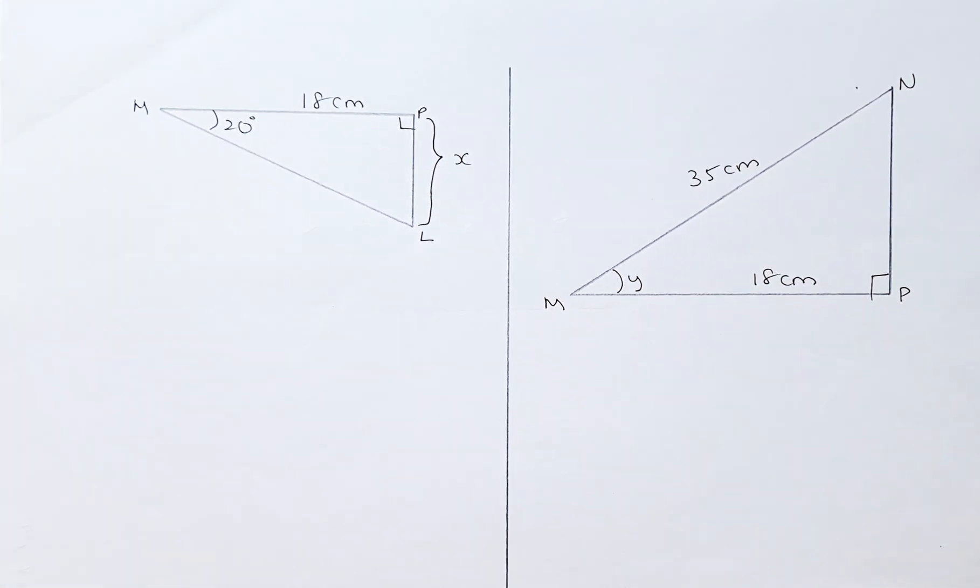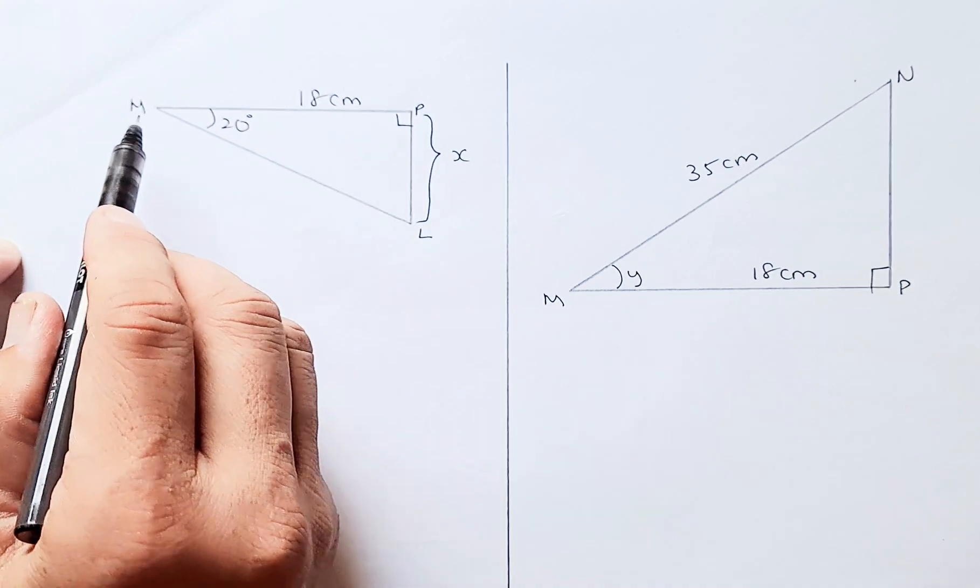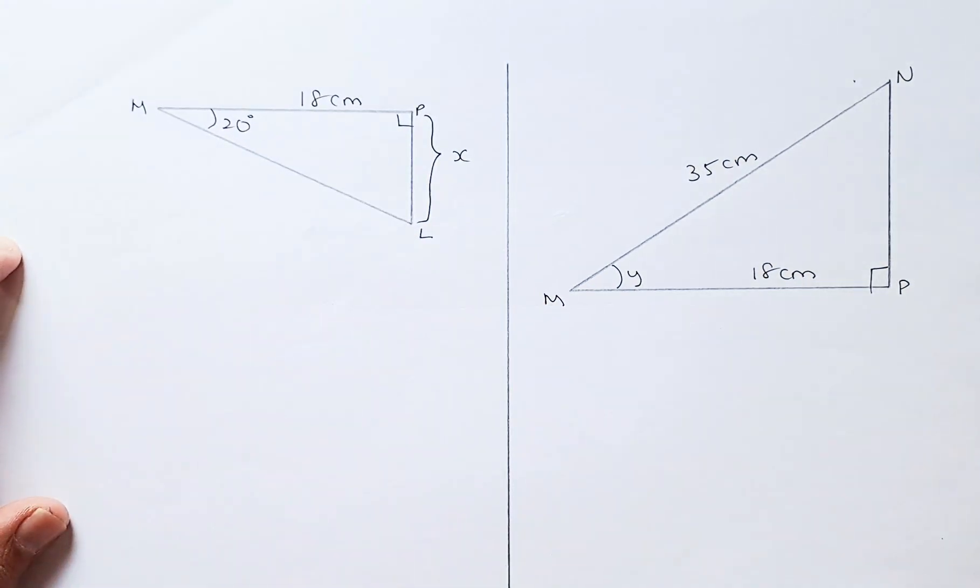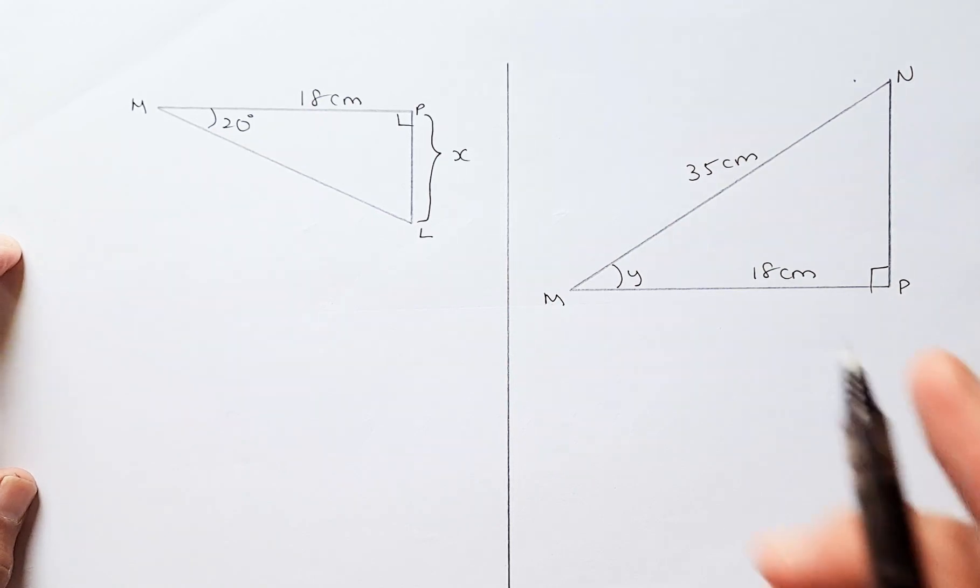So now we are going to find X. We look at the first right-angled triangle. This is 90 degrees, this is X, this is 18, and the angle PML is 20 degrees. So what we do, this is a SOHCAHTOA or trig ratio type of question, and you need to find X. So first thing you need to do,